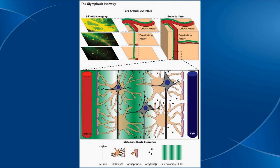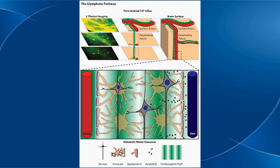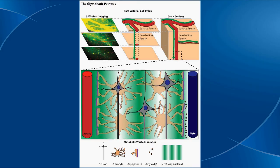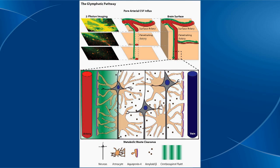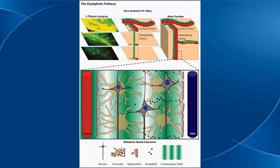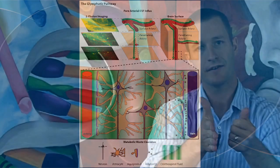We injected a fluorescent tracer into the CSF, or the fluid that surrounds the brain, and watched to see where it went. The fluid, as it moves down the artery, is able to move right into the brain tissue.